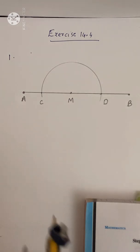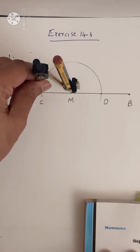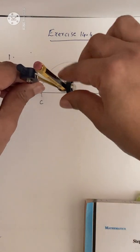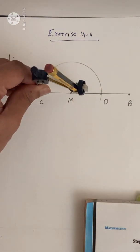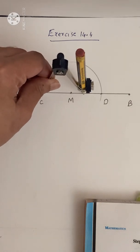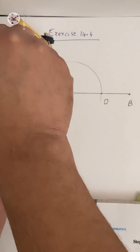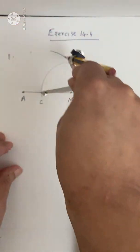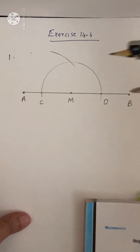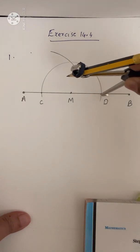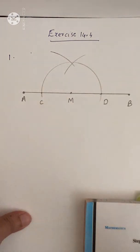Now we are going to draw the perpendicular. With C as center, take a convenient radius that is greater than CM, and draw an arc above the line segment.